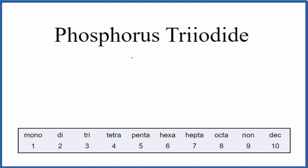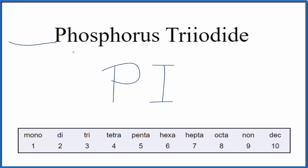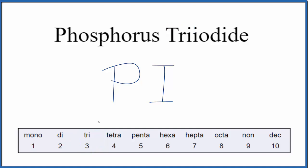To write the formula, we'll go to the periodic table — phosphorous is P, and iodine is I. Since there's nothing written in front of the phosphorus, we assume there's one phosphorus and don't write the one by convention. For the iodine, we have 'tri,' and tri means three — like a triceratops has three horns or a tricycle has three wheels — so we put a three as our subscript. The formula for phosphorous triiodide is PI3.